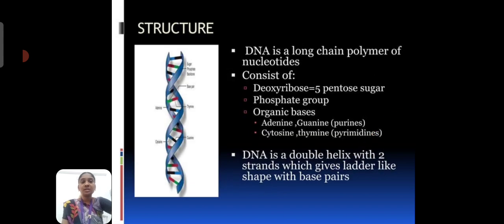Next one, we will see about DNA structure. The DNA is long chain polymer of nucleotides. The DNA consists of three major groups. First one is deoxyribose sugar, it is pentose sugar. Second one is phosphate group. Third one is organic bases.